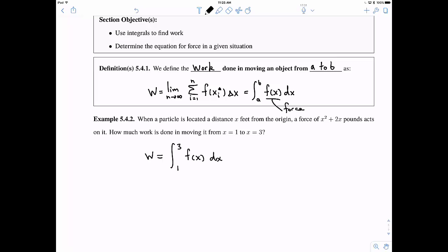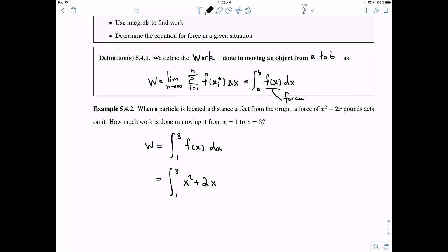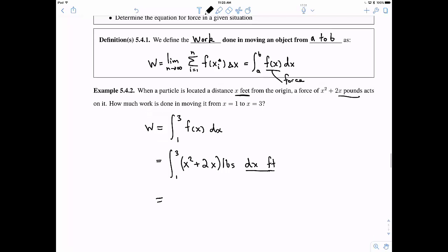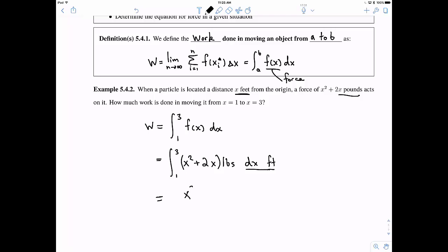We want to know how much work is done. So, using our definition, from x equals 1 to x equals 3 of f(x) dx, we can substitute in our particular force definition. Our force is this x squared plus 2x, and this is pounds. And we should think a little bit about units here. So this dx is going to be in feet. So when we integrate this thing, we're going to have units of foot-pounds.